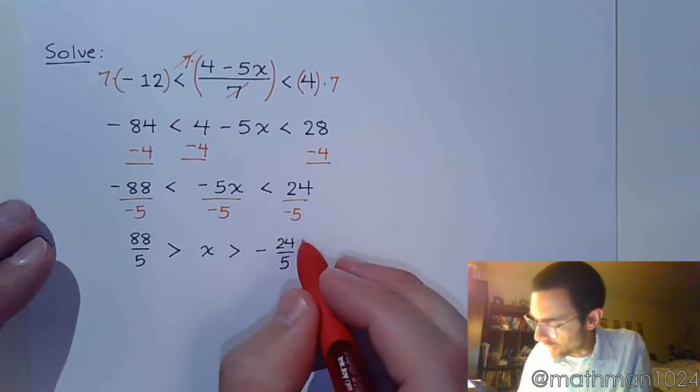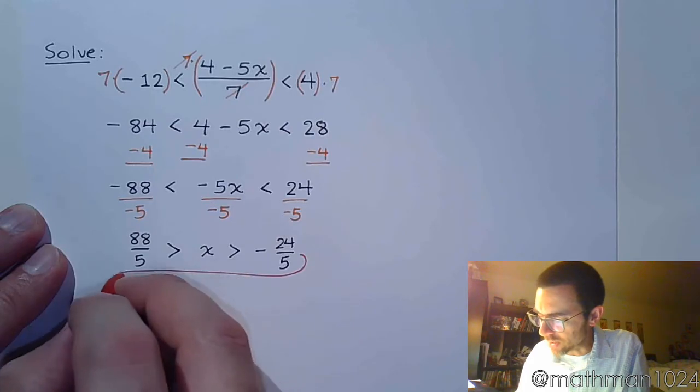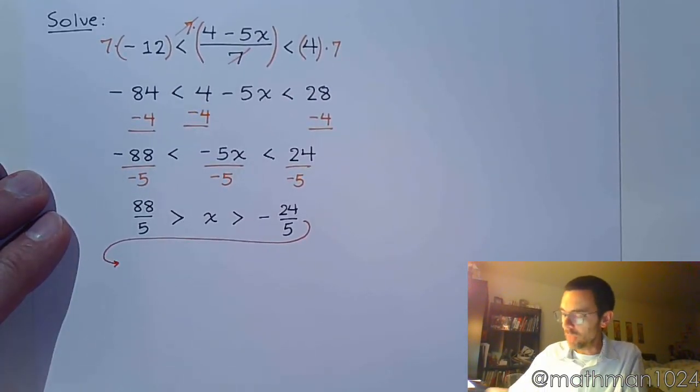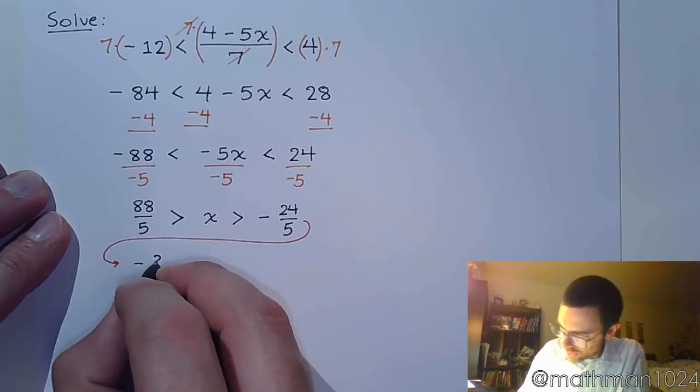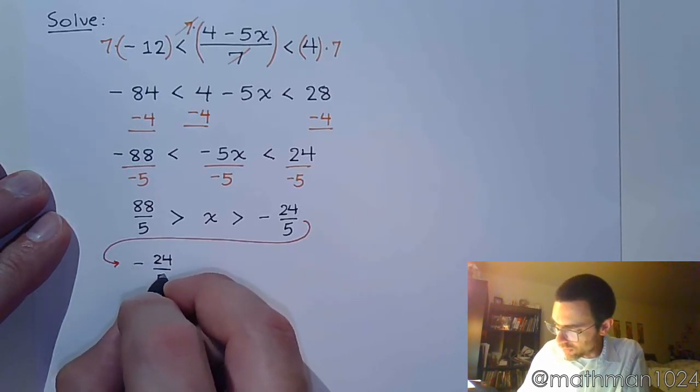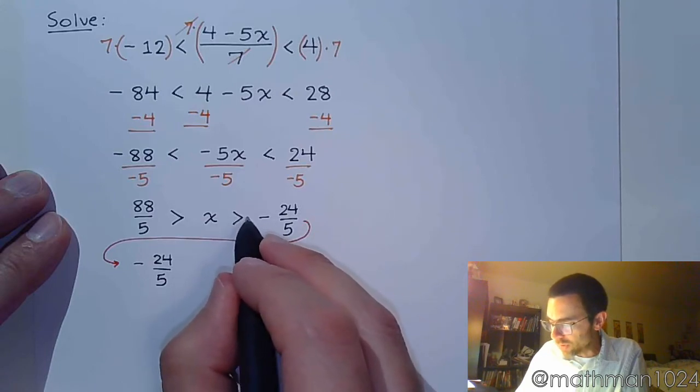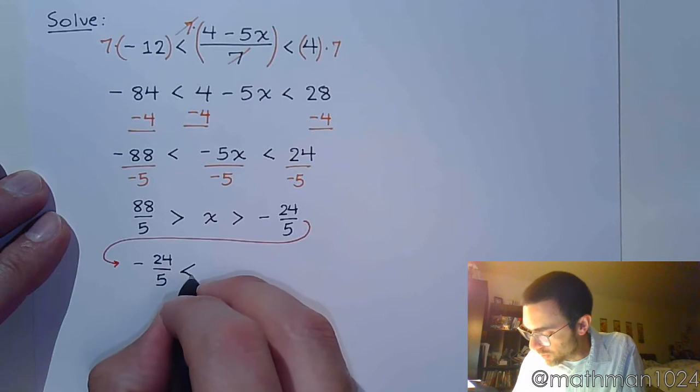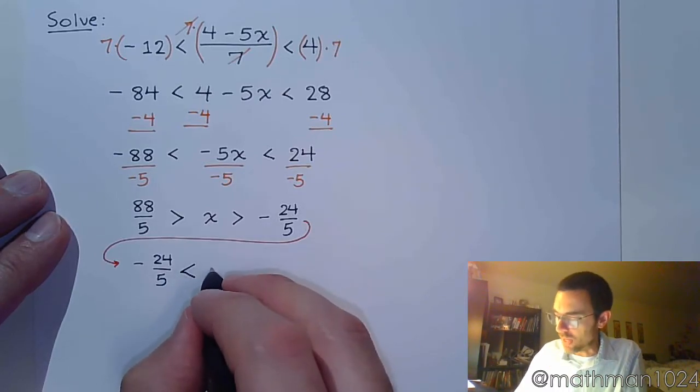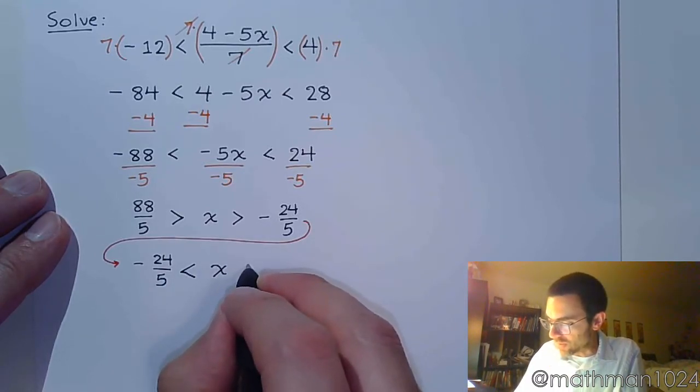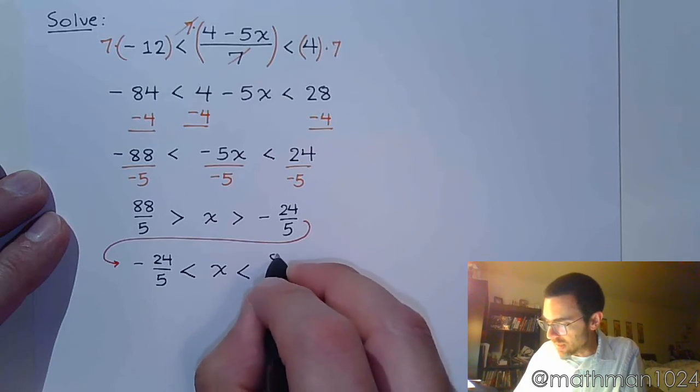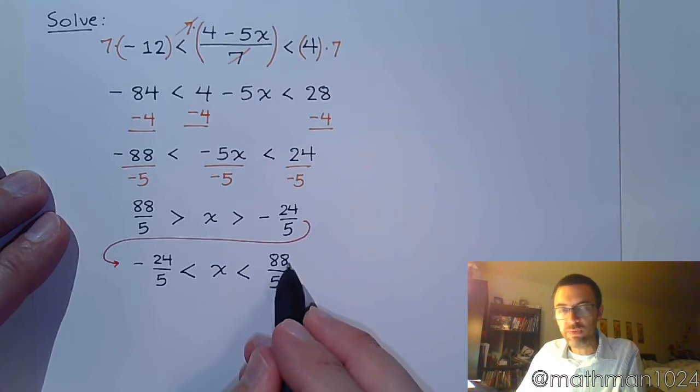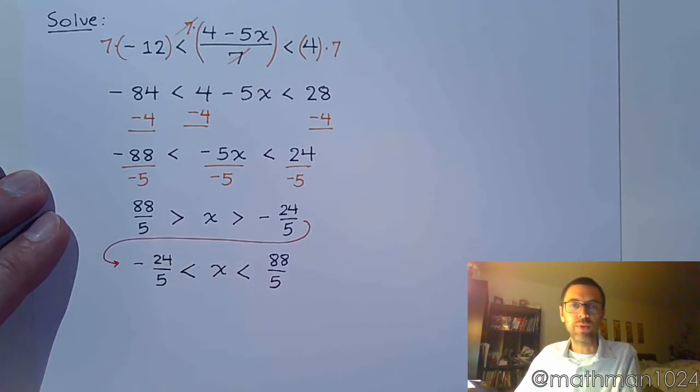Now, some of you may want to rewrite this because you don't like it going from greatest to least, and so you can just change the order here. But you've got to do it the right way. So, negative 24 over 5. Notice how this inequality symbol is pointing to the negative. So, even when you flip it around, it still has to be pointing to that. x, and this is less than 88 over 5. This inequality symbol is opening up to the fraction 88 over 5, just like it's opening up to it right there.